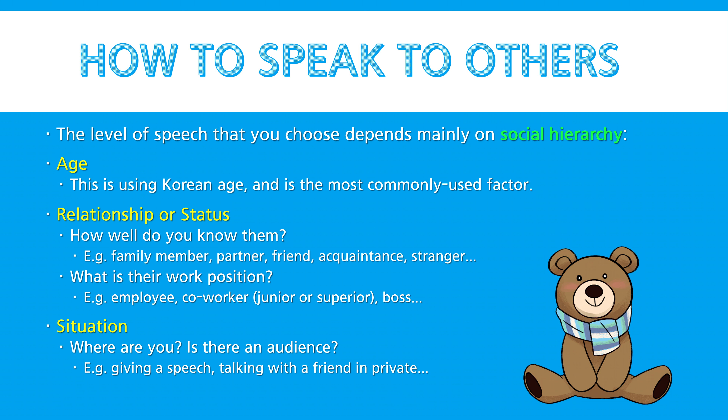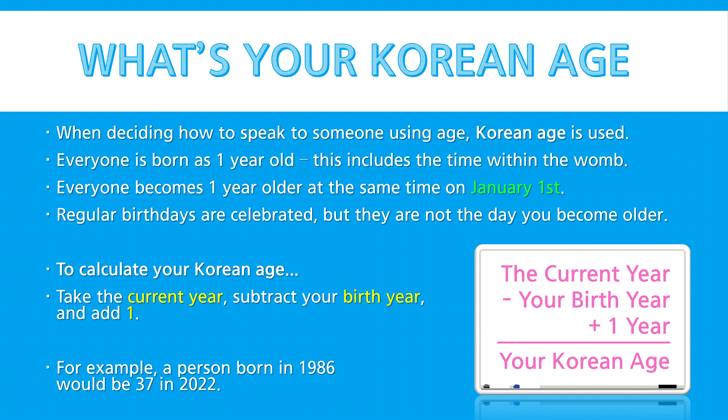Here's another example. You're talking with a close friend and you tell them that your father bought you a new computer, so your sentence would use parts of both casual speech and honorific speech: 사 주셨어. Or how about this? You tell a close friend that you'll see them tomorrow: 내일 봐. You say the same to an acquaintance after: 내일 봬요.